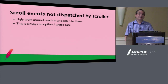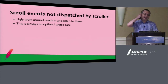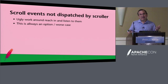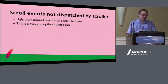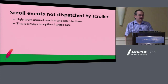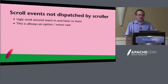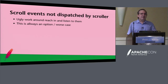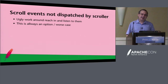Scroll events are not dispatched by the scroller, which wasted a little bit of time. However, because FlexJS doesn't enforce public/private access, you can actually reach into the scroller and get at the scroll events. This is probably one of the ugliest hacks we've had to do so far — I certainly wouldn't recommend it — but it's nice to know the framework is flexible enough that even when you run into issues, you can relatively easily find a way to fix it even if it's a little ugly.